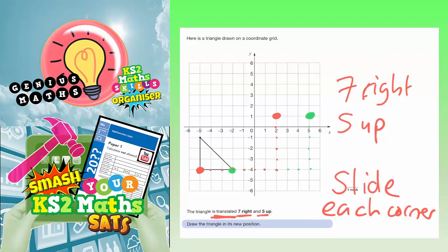We'll need one more colour for this top corner of the triangle. Again, 7 to the right and 5 up — counting across 7, then up 5. So it's going to end up there. I've translated each corner by the same instruction: 7 to the right and 5 up. All that remains is to join the new corners together — and that is where the new triangle needs to be.